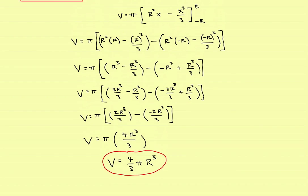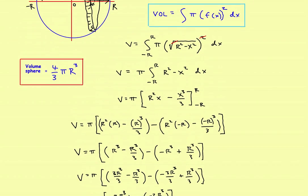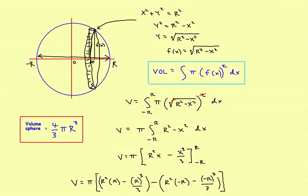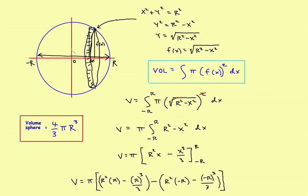To recap: start with a semicircle, and remember that the formula for a full circle is x squared plus y squared equals r squared. Use that to get your function of x, then plug into the disk method formula. That's how you use the disk method to prove the sphere volume formula you encountered back in geometry.